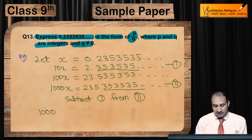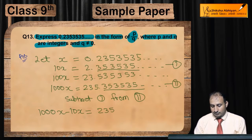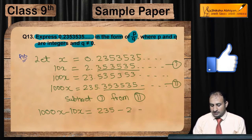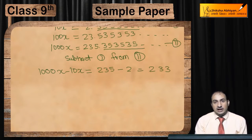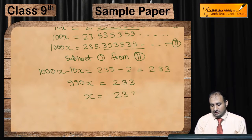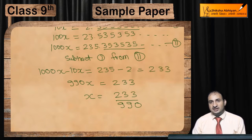तो आपको क्या मिलेगा? यहाँ पर 1000x minus 10x is equal to 235 minus 2. क्योंकि यहाँ पर जो decimal है, decimal तो दोनों के same है, तो वो minus हो जाएंगे. तो 235 minus 2, यानिके 233 आपको मिलेगा. अब 1000 में से 10 को minus कर देंगे तो 990x मिलेगा, is equal to 233. यह x is equal to 233 upon 990. इस तरह से P by Q की form में change हो गया.